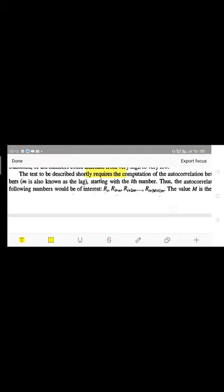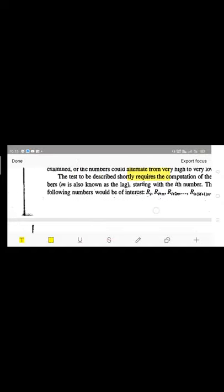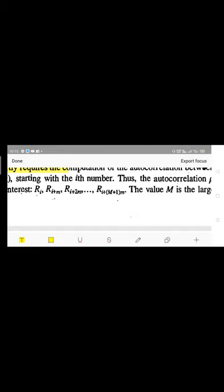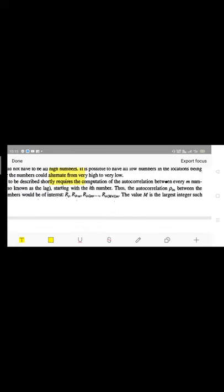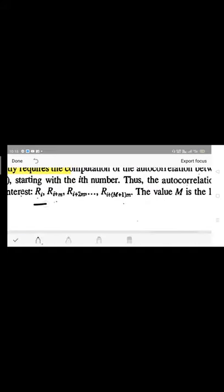The autocorrelation is denoted as p(i, m). Let the ith random number be R_i. Then the sequence of interest is: R_i, R_i+m, R_i+2m, and so on, up to R_i+(M+1)m, where m stands for the lag. For our example, m was 5 and i was 1 (first random number).